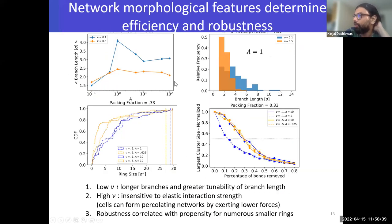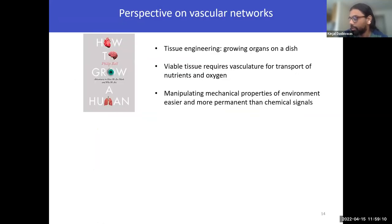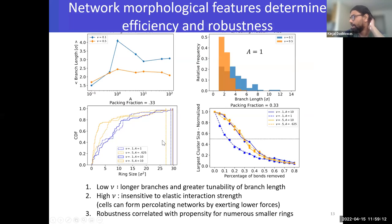We looked at more morphological features that could be related to the transport function of the network, like the average branch length and this distribution of branch lengths. We find that at the lower nu, the branch lengths are longer and are more tunable, whereas at higher nu, they're insensitive to the elastic interaction strengths. We also explored the robustness, which is a kind of reverse percolation, where we remove bonds from the network and see how the largest connected cluster size decreases.